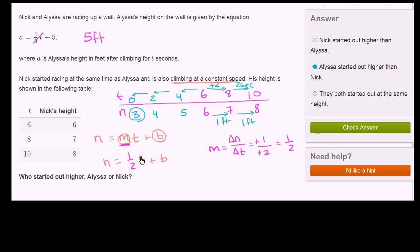So when time is 6, we know that n is 6. So you have 6 is equal to 1/2 times 6 plus b. Or you get 6 is equal to 3 plus b. Subtract 3 from both sides. You get b is equal to 3. So there you have it.